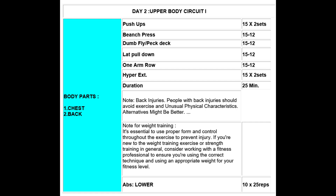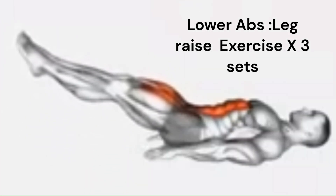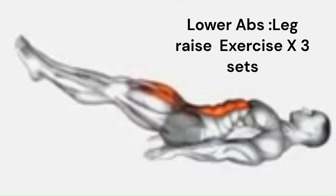Then we move to back exercises: lat pull down and one arm row — 2 sets of 15 and 12 repetitions. And hyper extension — 2 sets of 15. The last exercise is lower abs — 2 sets of 10. For example, leg raise or reverse leg raise.